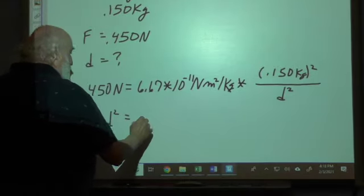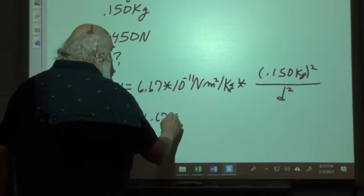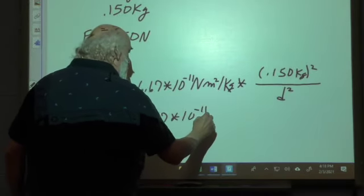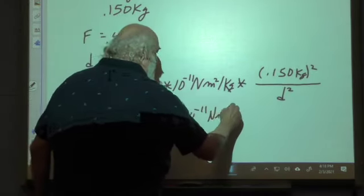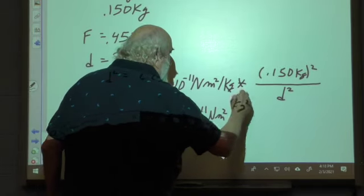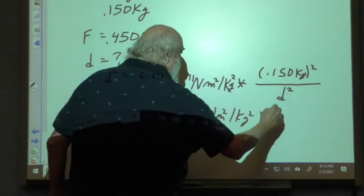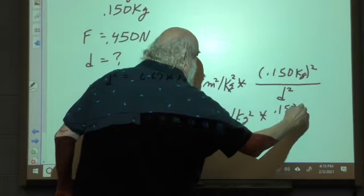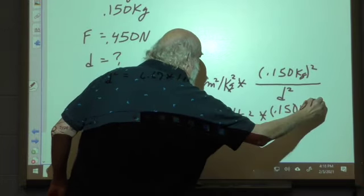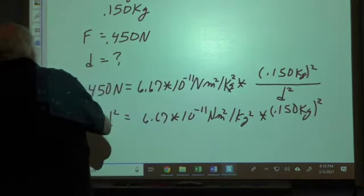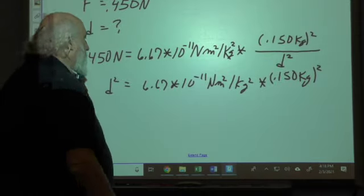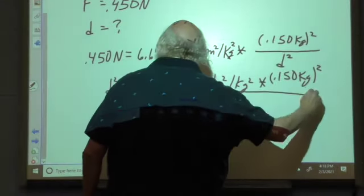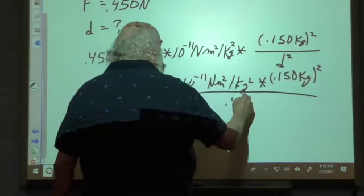So d squared is going to equal 6.67 times 10 to the negative 11 newton meters squared per kilogram squared, times 0.150 kilograms quantity squared, over 0.450 newtons.